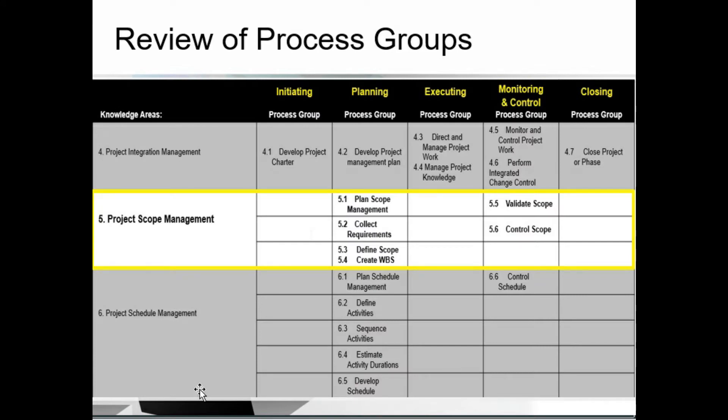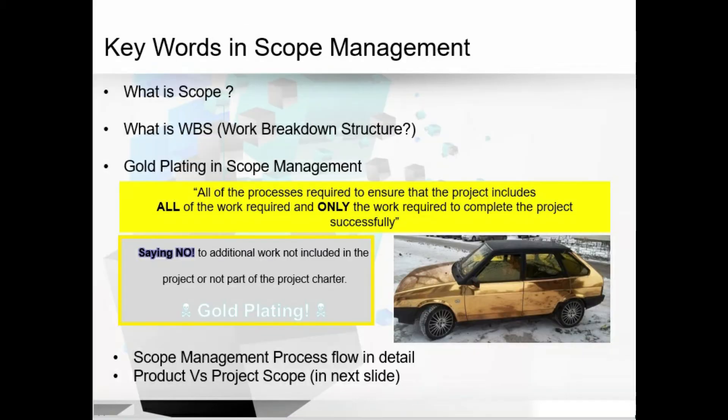Before starting with agile or predictive life cycles in terms of scope, I will explain the keywords which are very important in scope management: what is scope, work breakdown structure (WBS), gold plating, and scope management process. In simple words, scope is the process of defining what work is required and then making sure that work, and only that work, is done.